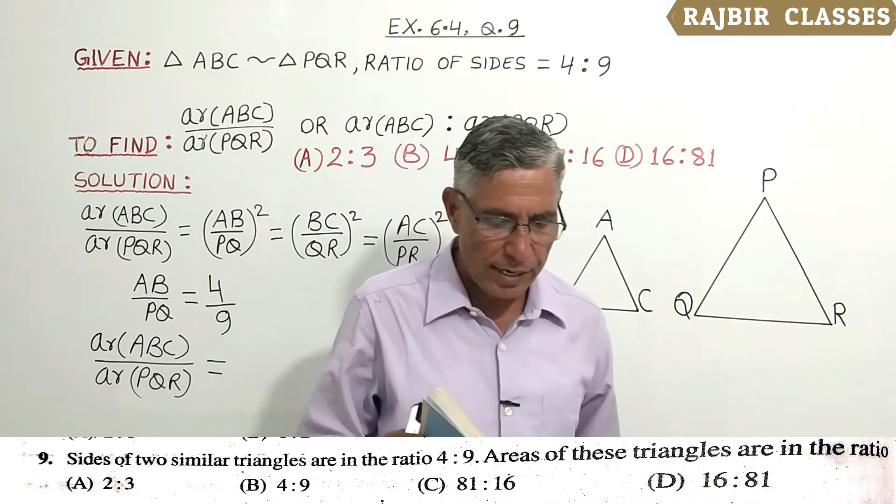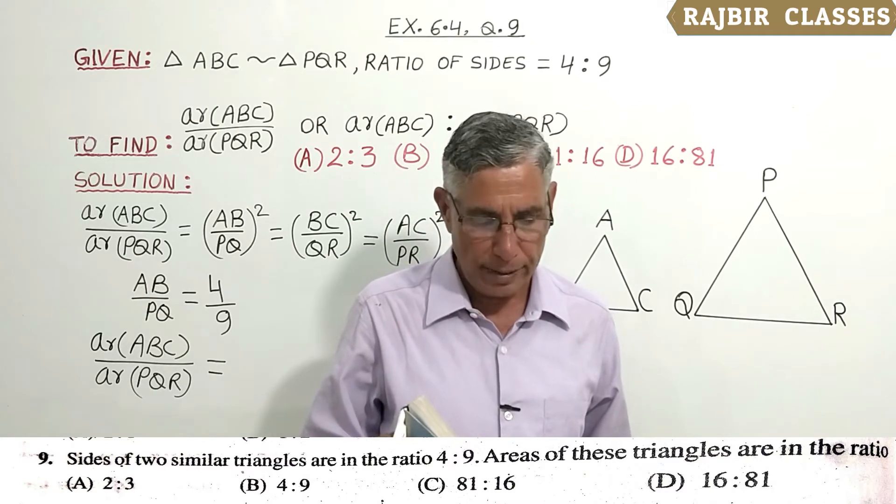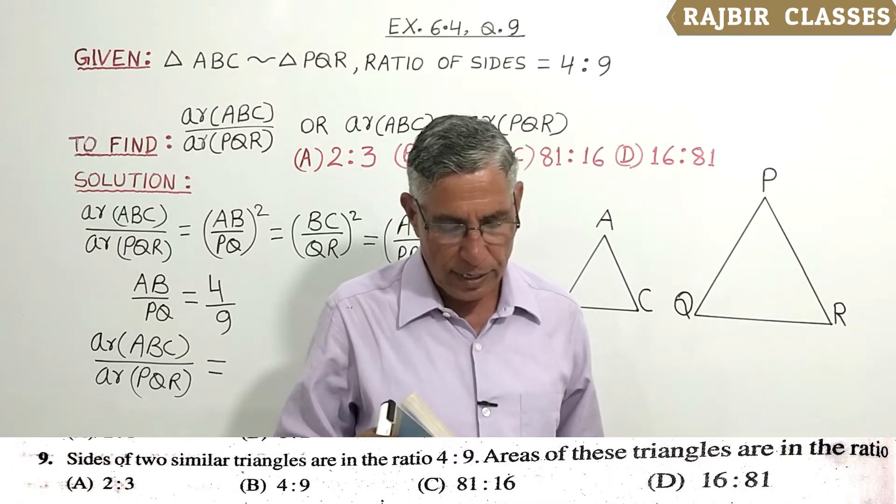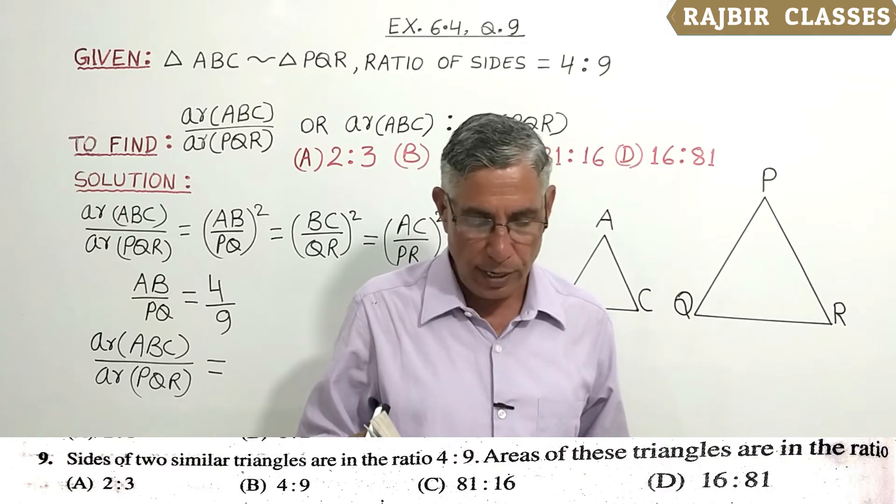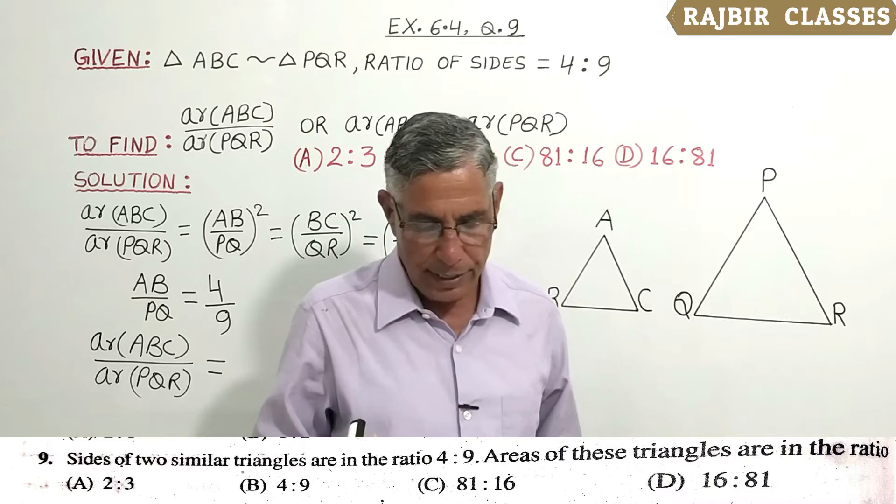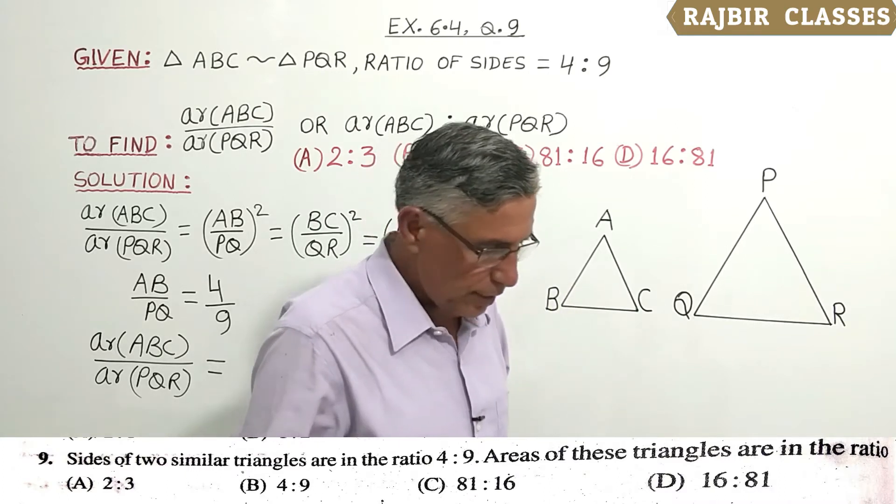Sides of two similar triangles are in the ratio 4:9. Areas of these triangles are in the ratio: A) 2:3, B) 4:9, C) 81:16, and D) 16:81.